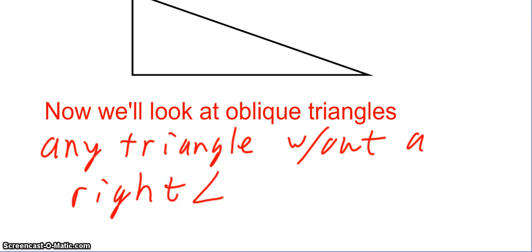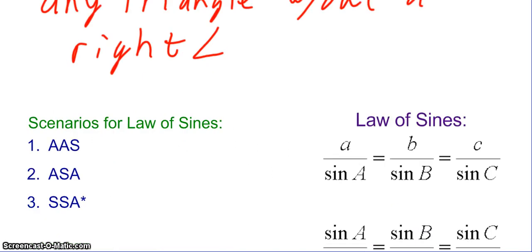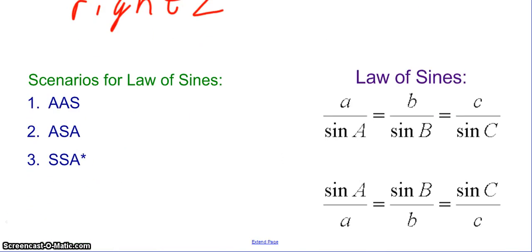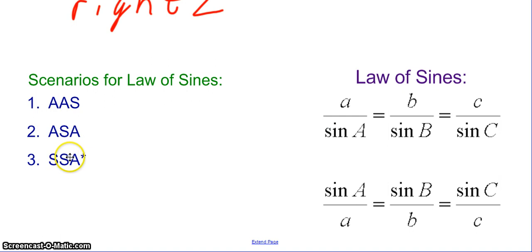One of the methods to solve oblique triangles is with the law of sines. There are three different scenarios in which we can use the law of sines: angle-angle-side, angle-side-angle, or side-side-angle. Side-side-angle is what we call the ambiguous case, and we're going to talk about that one last.